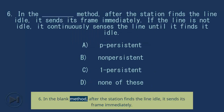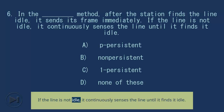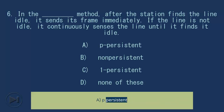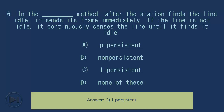Question 6: In the blank method, after the station finds the line idle it sends its frame immediately. If the line is not idle, it continuously senses the line until it finds it idle. A) P-persistent, B) Non-persistent, C) One-persistent, D) None of these. Answer: C) One-persistent.